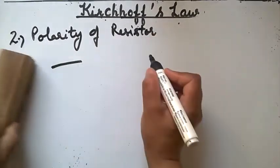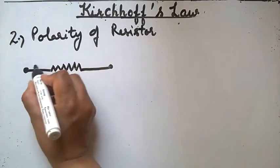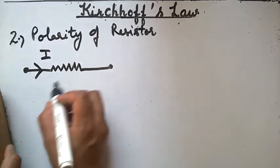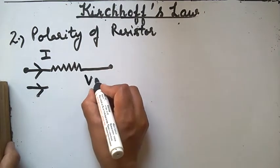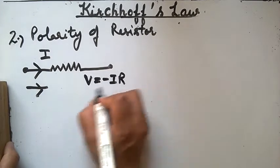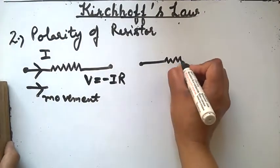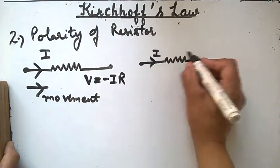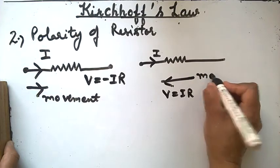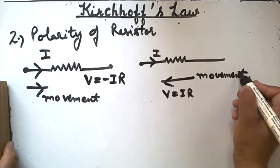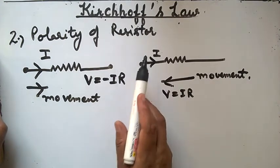For resistors: if a resistor is connected and our movement is in the direction of current, there is always a voltage drop, so the voltage is taken as negative, equal to minus IR. If our movement is opposite to the direction of current, then we take the voltage as positive. We will follow these sign conventions while solving Kirchhoff's law numericals.